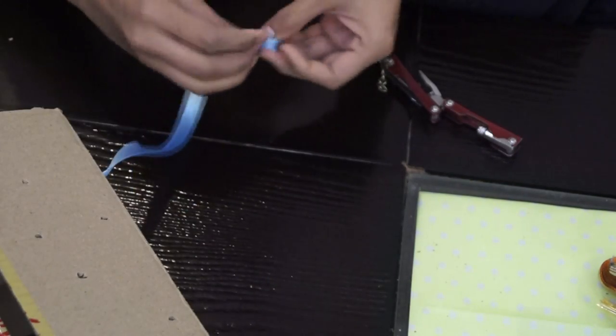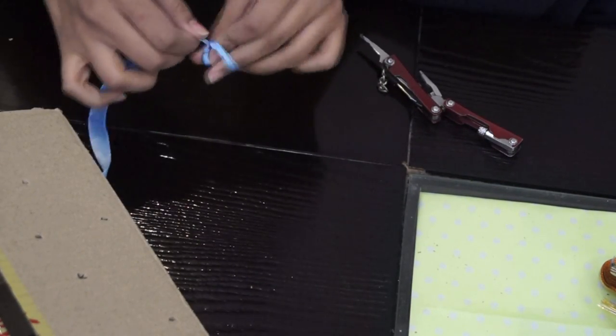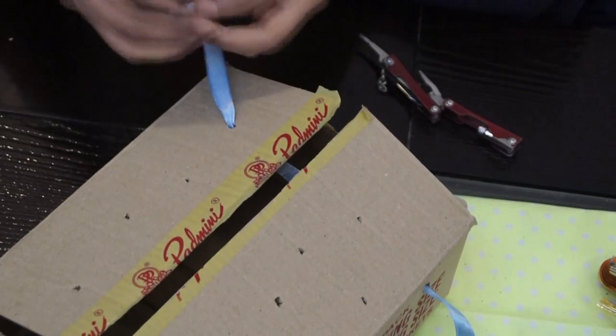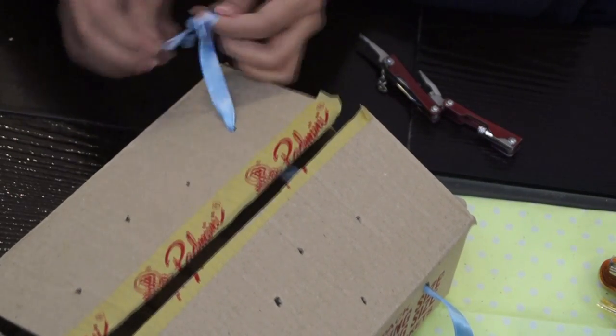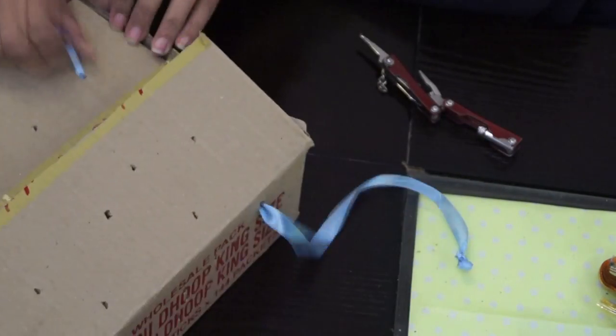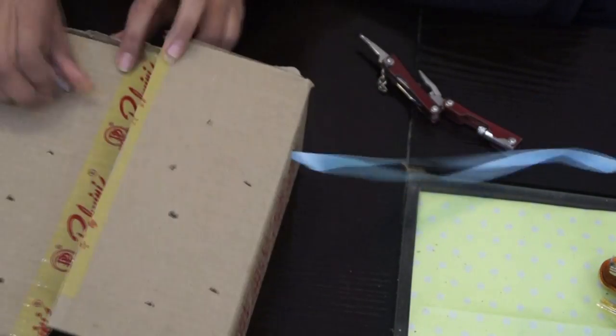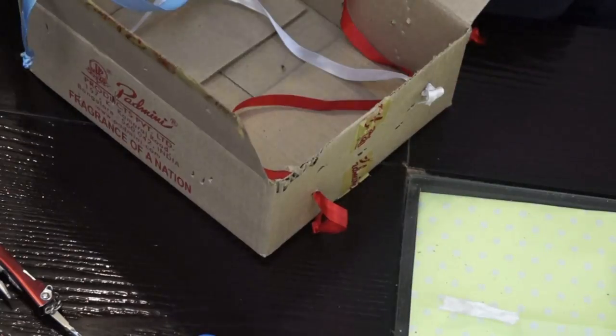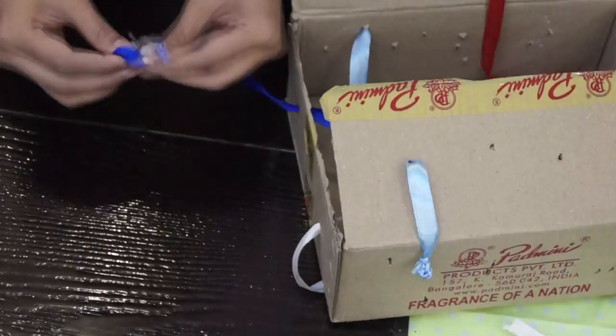Then at last, take your ribbon and make few knots at the end of this ribbon. We have to make these knots at both the end of this ribbon like this. So in this way, your baby can pull this ribbon from here and there. So in the same way, we have to pass the different colors of ribbon through these holes which we have made on the cardboard box like this.